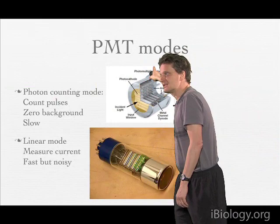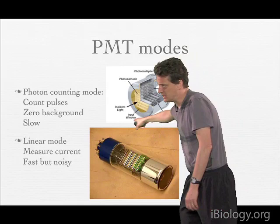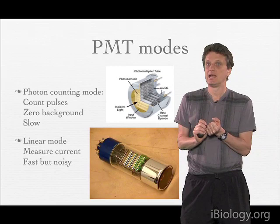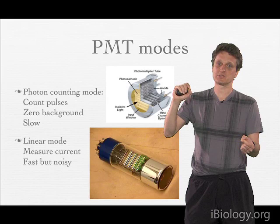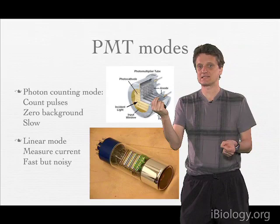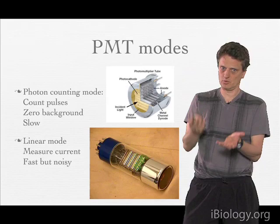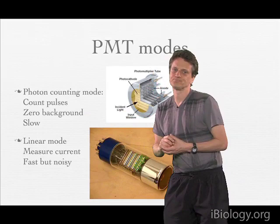There are other types of designs for PMTs, but they all work on the same principle using dynodes. Here you see a real example of what such a tube looks like. You can run them in different modes. One mode is the photon counting mode, where you set a very high gain so that every photon that comes in and is converted into an electron is counted as a single pulse. The advantage is that you have no background, because either you have a hit or you don't. The downside is that this is very, very slow.